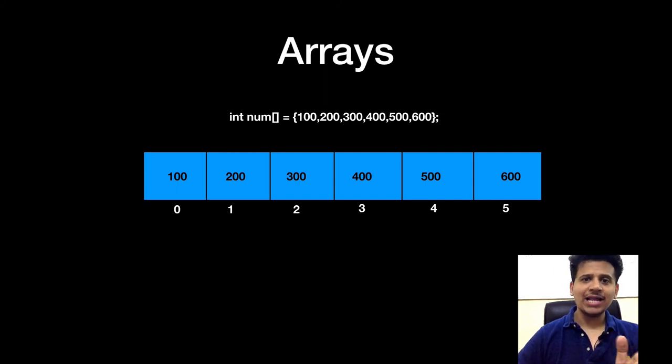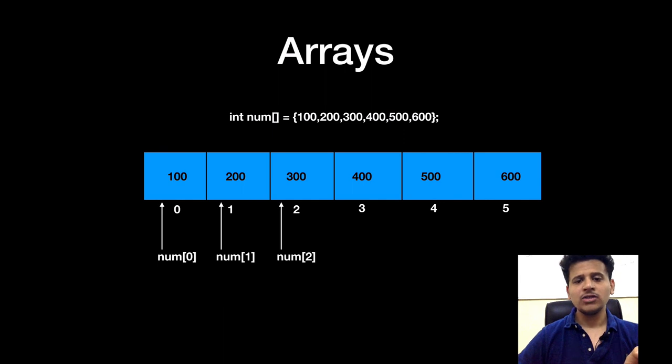Remember this thing, array starts with 0 till the n-1. We can also access a single element from that array such as if we want to access just 0th element of array, we can use num of 0. If we want to access the first element, we can use num of 1 and so on. We can access every element of array from 0 to 5.